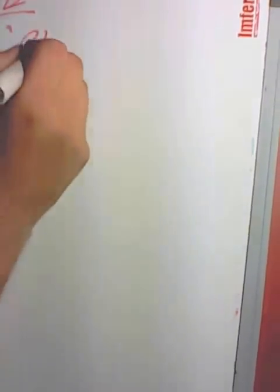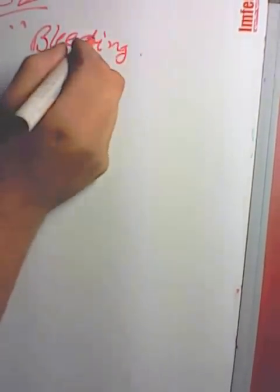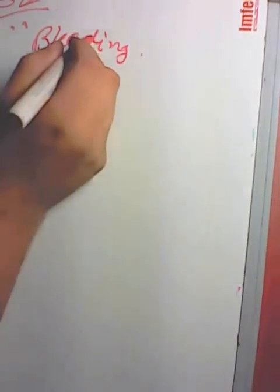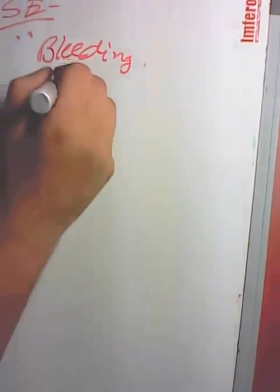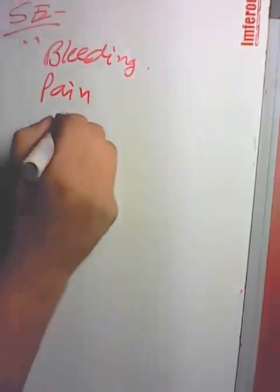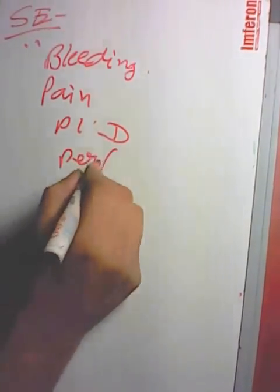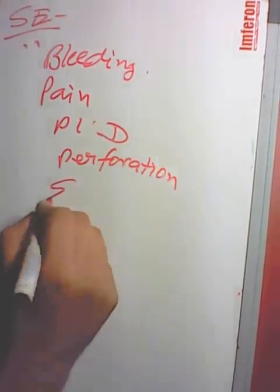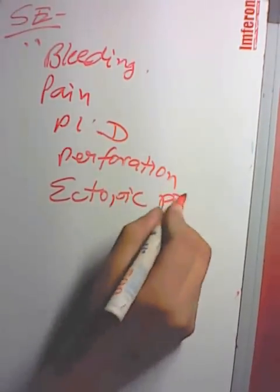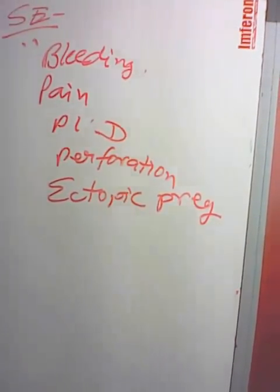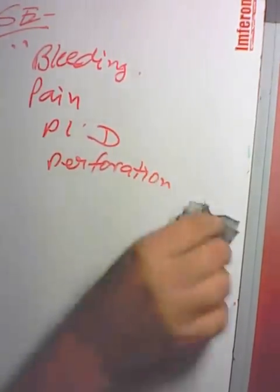Side effects and complications of IUD: major side effect is bleeding; others include infection, perforation, and ectopic pregnancy.